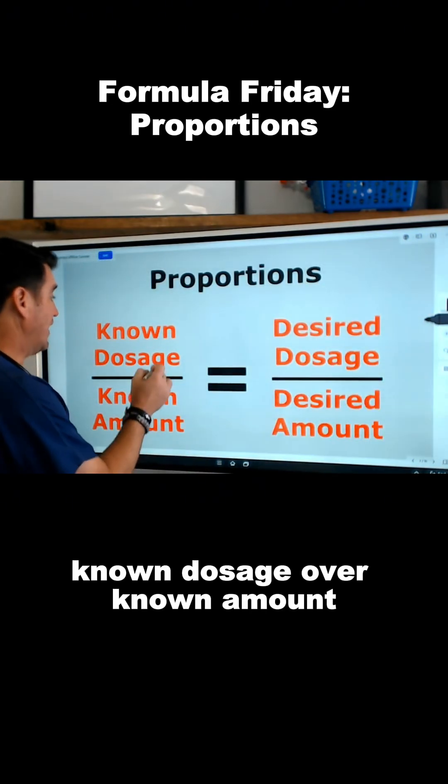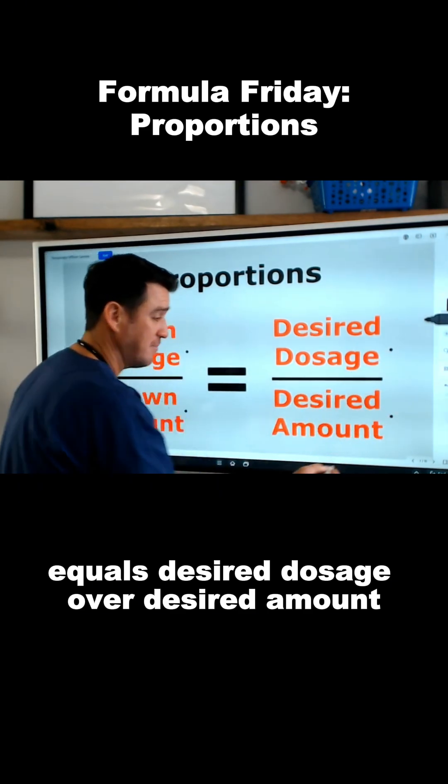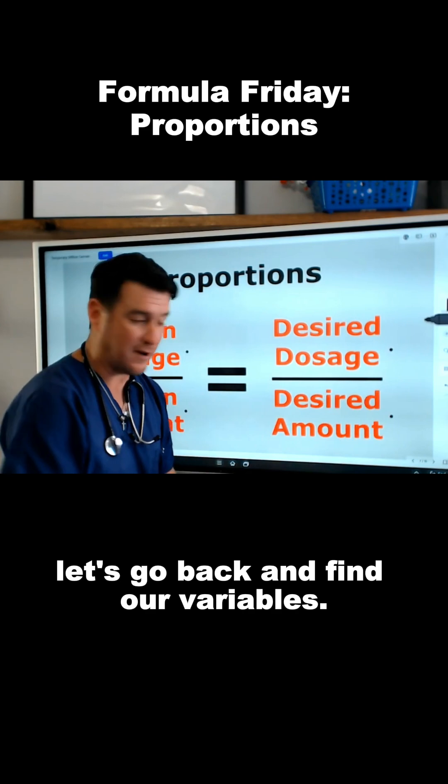We go back to the formula. Known dosage over known amount equals desired dosage over desired amount. Let's go back and find our variables.